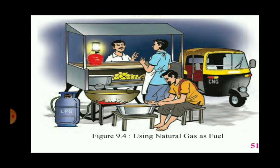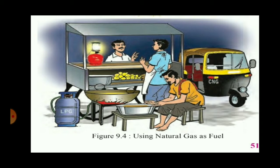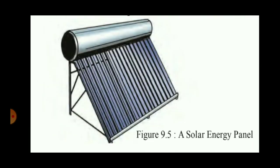In figure 9.4, the question is: which energy resource is used in lighting the lamp, running the rickshaw, and heating oil? A vendor has a lantern whose cylinder contains LPG — Liquefied Petroleum Gas — used to light the lantern and heat oil. On the rickshaw, CNG is written, which means Compressed Natural Gas, used to run that rickshaw.